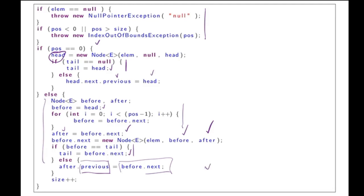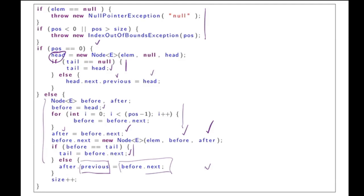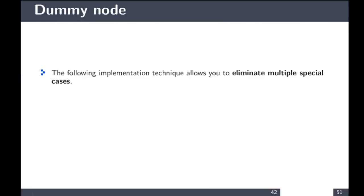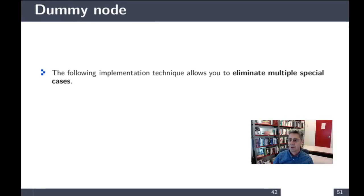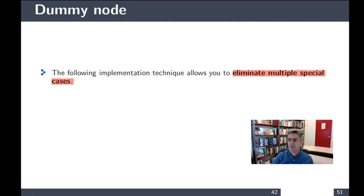Working with a doubly linked implementation having head and tail pointers is somewhat complicated due to many special cases. Our last implementation of the list does not aim to accelerate execution, but rather to simplify the implementation by eliminating special cases.